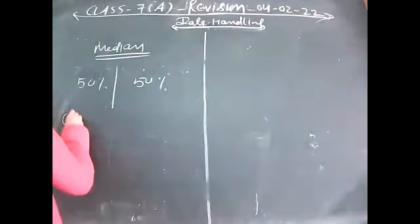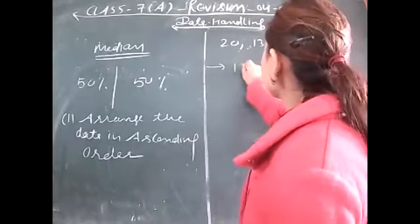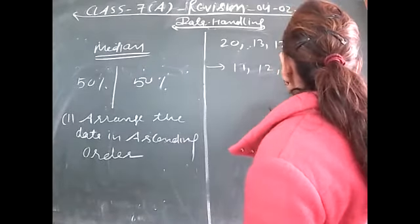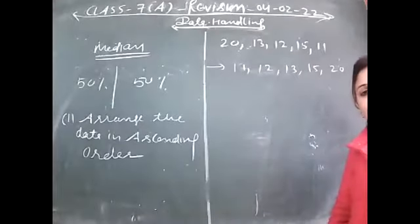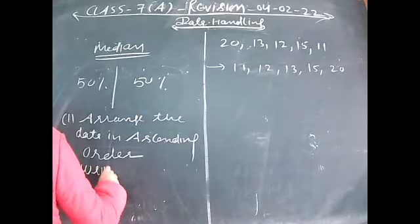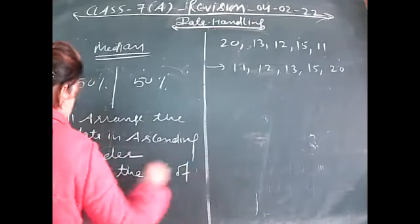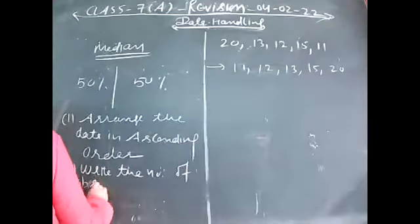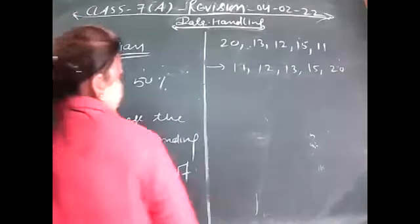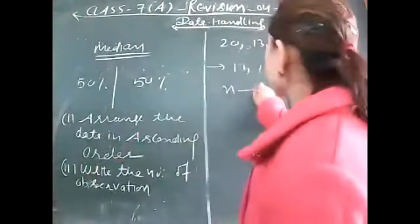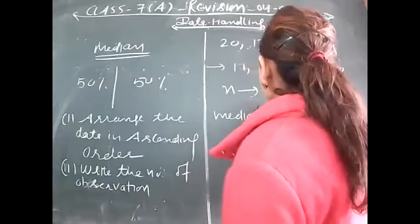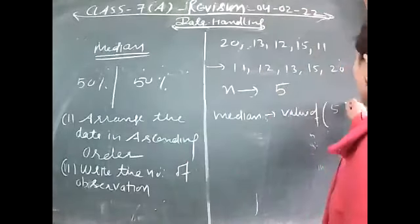Whenever you are finding the median, you have to arrange the data in ascending order first, then proceed with the next steps. For example, if I have a data and I go directly without arranging, it will give me the wrong answer. So first I arrange the data in ascending order. The second step is to write the number of observations, denoted by n.